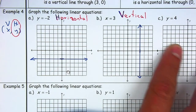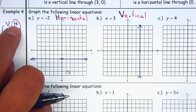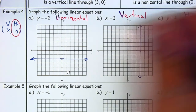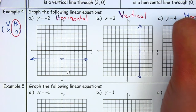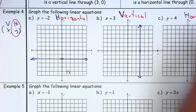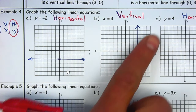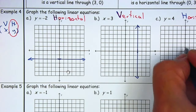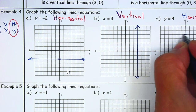The last one: y is equal to a number, so y is going to be a horizontal line. Write down horizontal. It has to cross the y-axis at 4, so I go 1, 2, 3, 4, and then I just expand it.